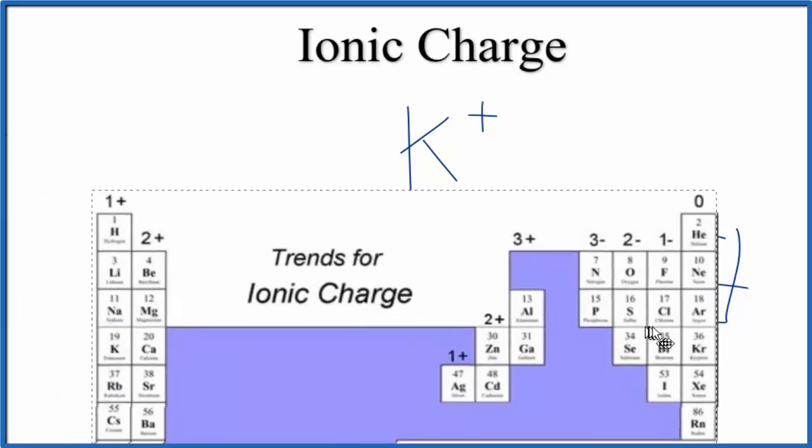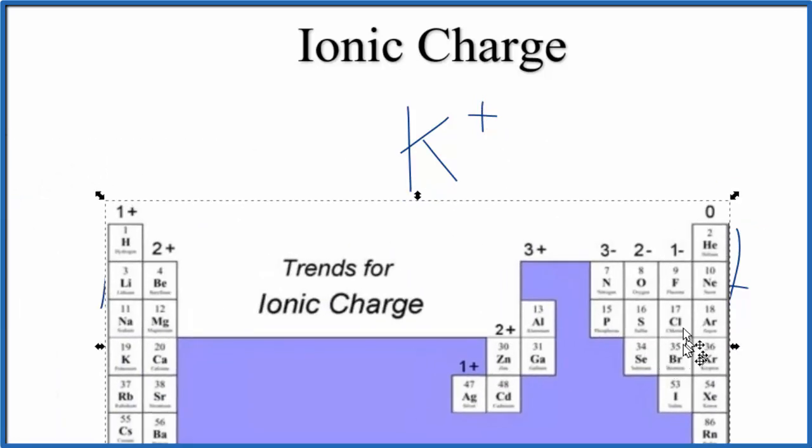So you can use the periodic table to find the ionic charge for potassium here, or you can use the electron configuration to figure it out. Either way, the ionic charge for potassium, when it bonds, forms ions, K plus.